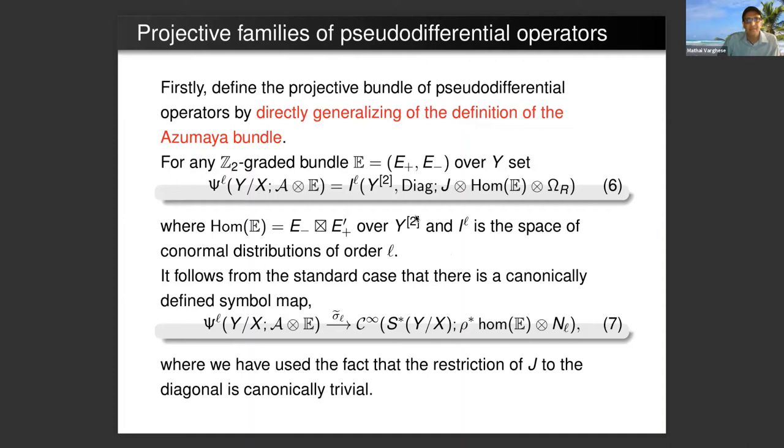φ pullback star of this bundle A, this bundle of smoothing operators, is trivializable, and part of the data is a choice of this trivialization which we call κ. Now define the bundle projective bundle of pseudodifferential operators by following the definition of the Azumaya bundle. This bundle E over Y is part of the data of the projective pseudodifferential operators of order l along the fibers of the fiber bundle Y with coefficients A tensor E.